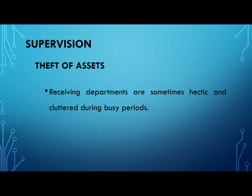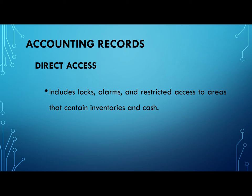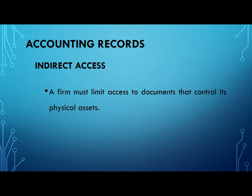The fourth control is accounting records. Under accounting records, direct and indirect access are discussed. In direct access, locks, alarms, and restricted access are controlled and monitored because they affect the firm's inventories and cash. In indirect access, the firm limits access to documents that control its physical assets like equipment and machinery.